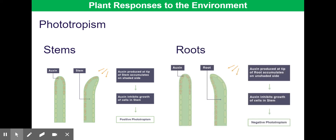In the roots, again we start with an even distribution of auxin, and then introduce a directional light source. Auxin diffuses away from light; however, in roots auxin inhibits cell growth. So the cells which have that auxin do not grow as much as the cells exposed to light, resulting in bending away from the light — negative phototropism.